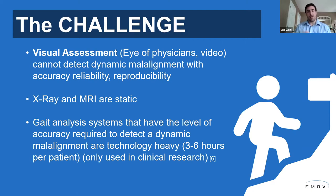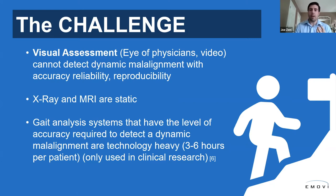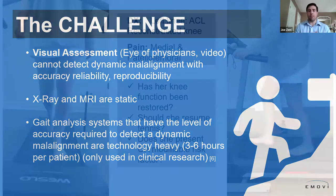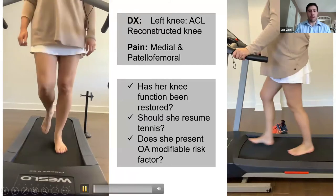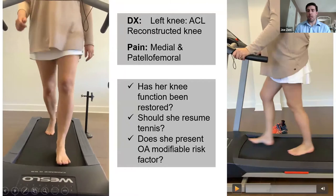A traditional gait lab can look at movement, but those systems are very technologically heavy, very expensive, and typically only used for clinical research or surgical planning. We don't really have anything that has allowed us to identify the mechanics at the knee joint when somebody is walking — and so, as always, we'll present our visual assessment challenge.